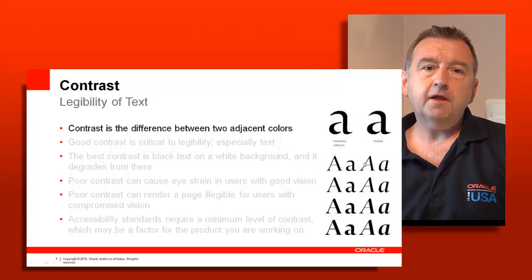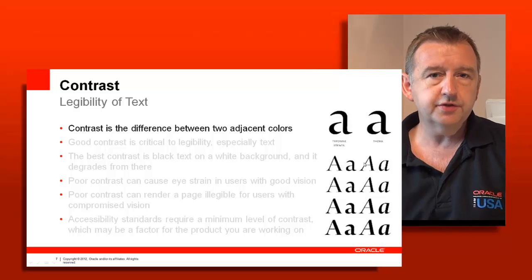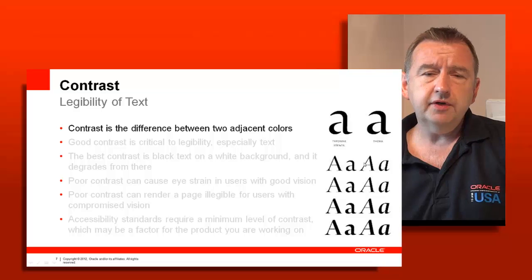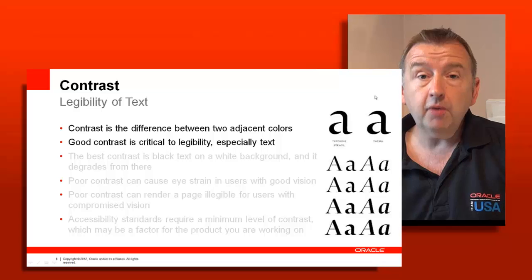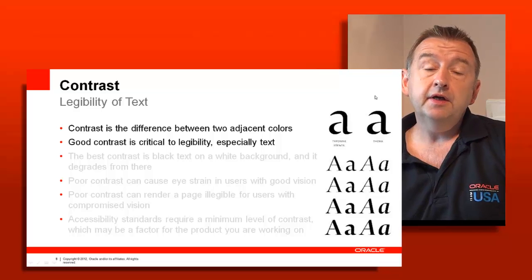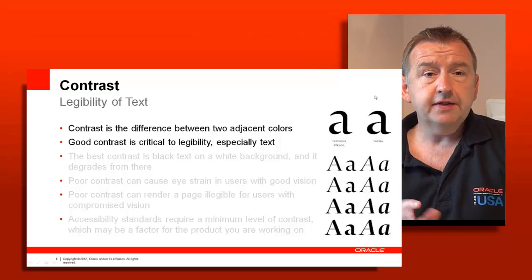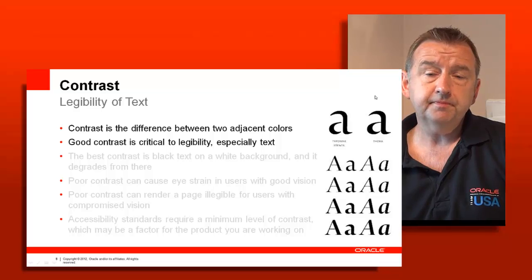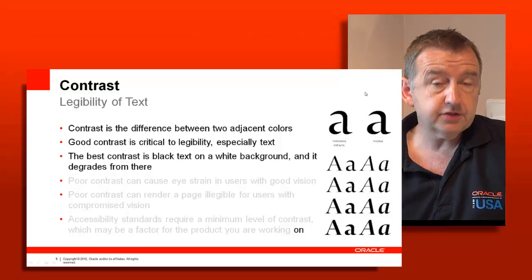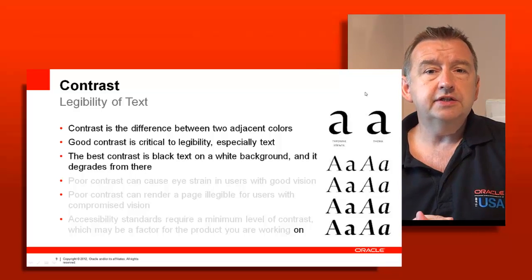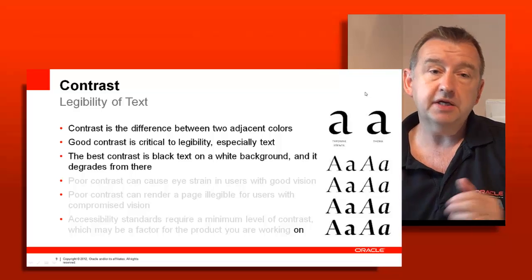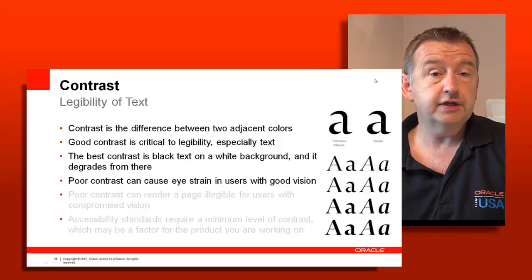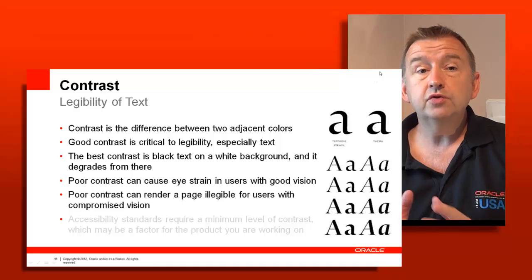Now let's consider contrast. Contrast is about the text you're using — it's the difference between two colors, most noticeably the foreground and background colors you use for your text. There are two key issues here with contrast. First, we have a generally aging population whose eyesight isn't what it used to be. And in any case you may have legal requirements for accessibility, which would specify that a particular level of contrast for text is required to make it readable on the page. Even for those users with very good vision, poor contrast can cause eye strain and can render a page illegible if you have users with compromised vision.